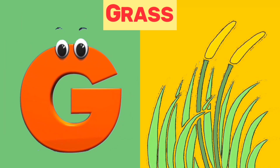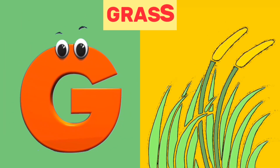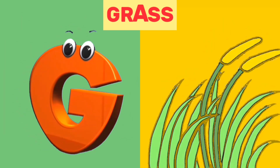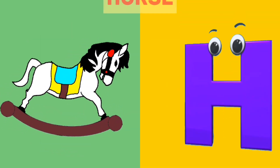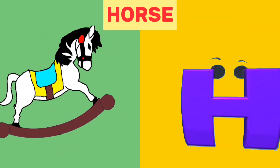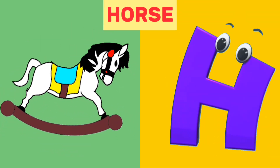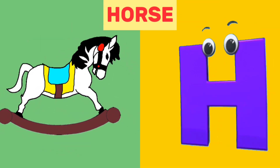G is for grass. G, g, grass. H is for horse. H, h, horse.